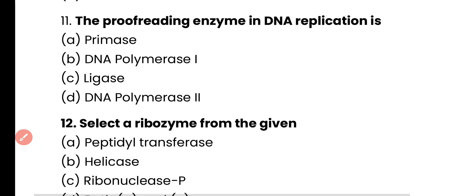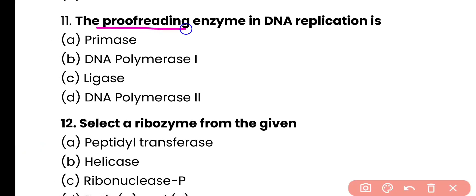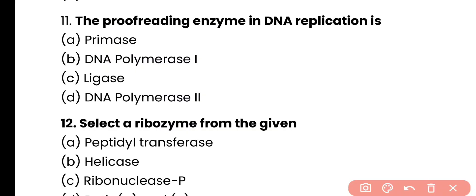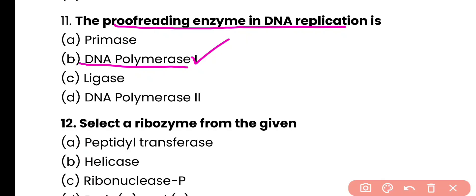Question number 11. The proofreading enzyme in DNA replication is primase, DNA polymerase 1, ligase, or DNA polymerase 2? Correct answer is option B. The main proofreading enzyme in DNA replication is DNA polymerase 1.